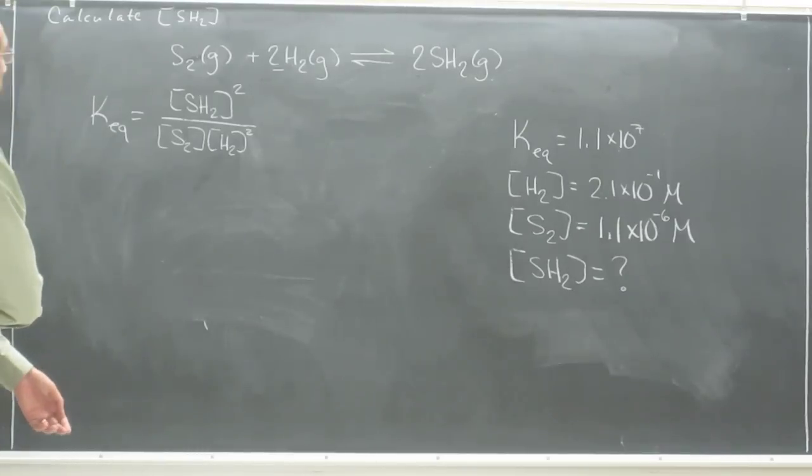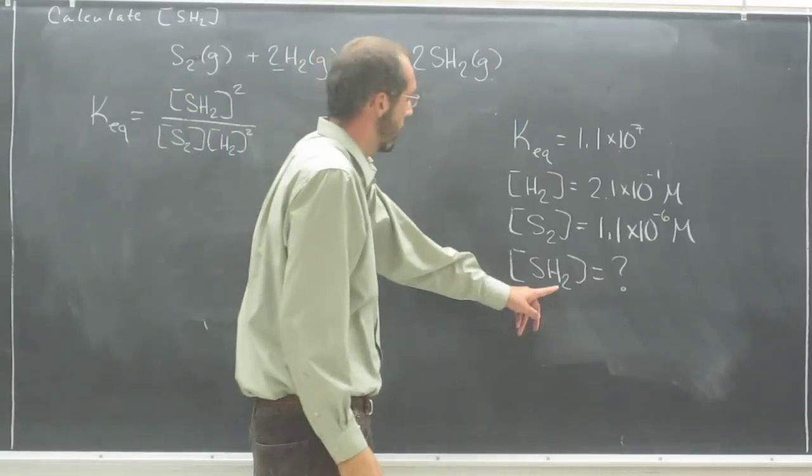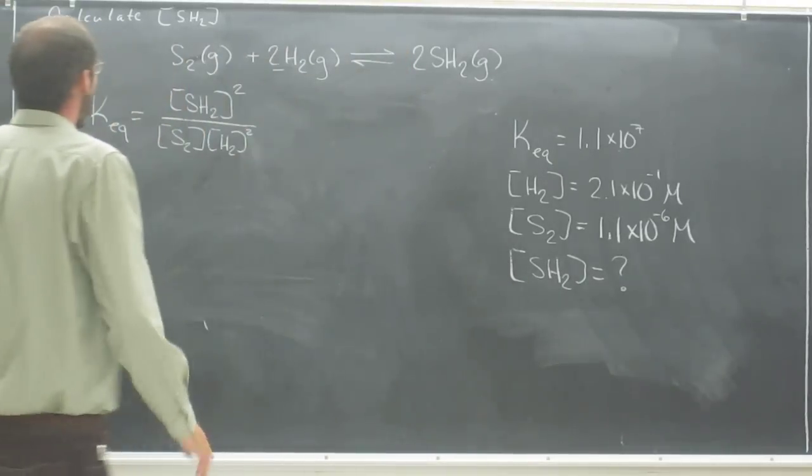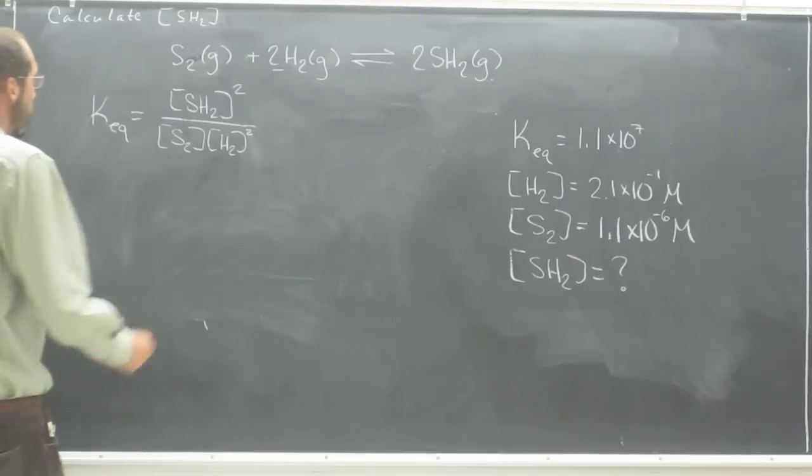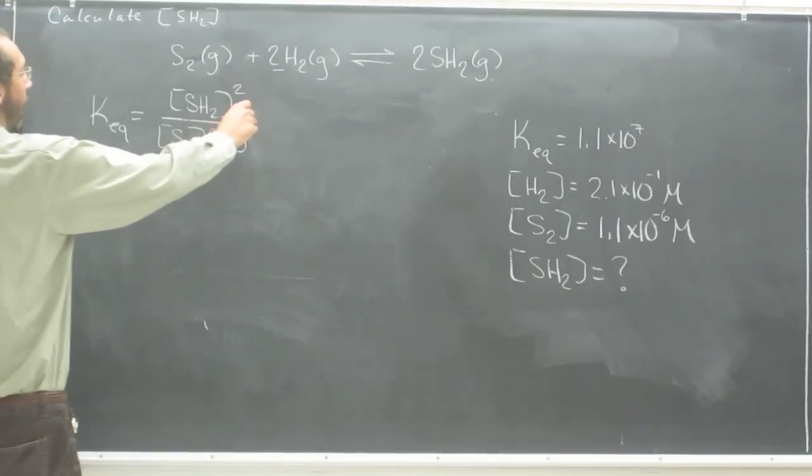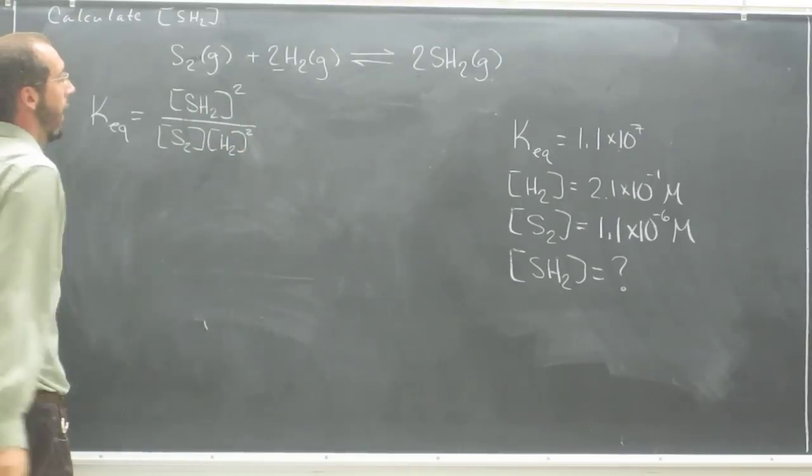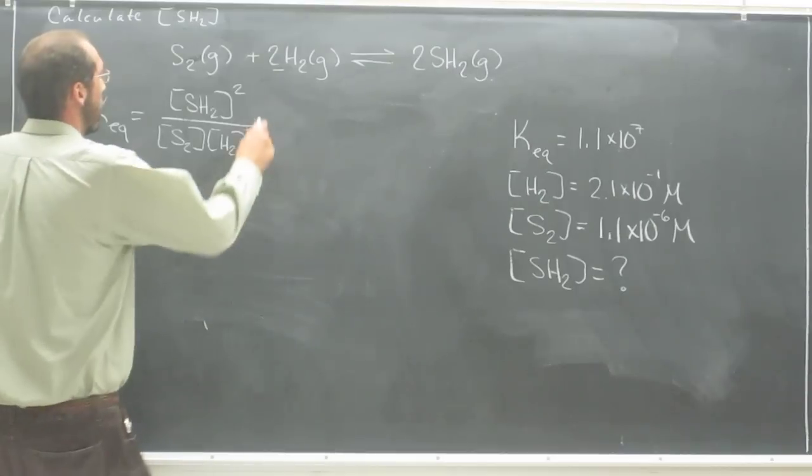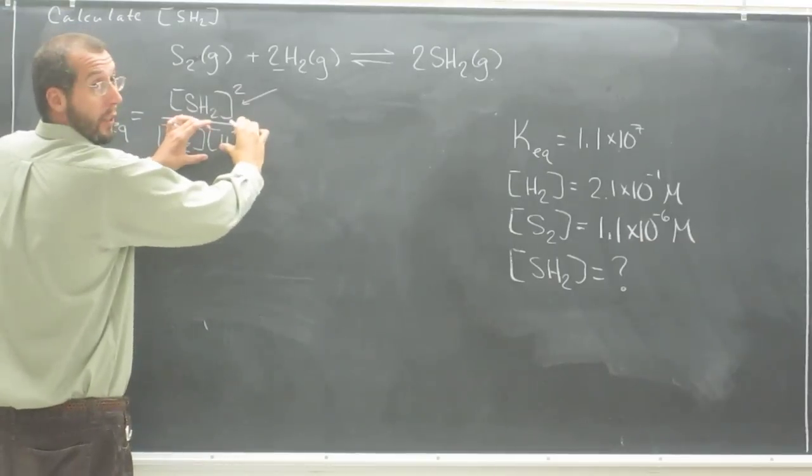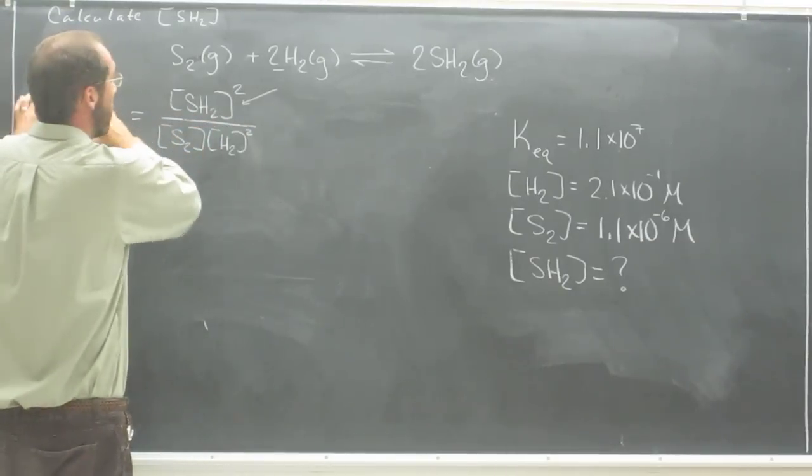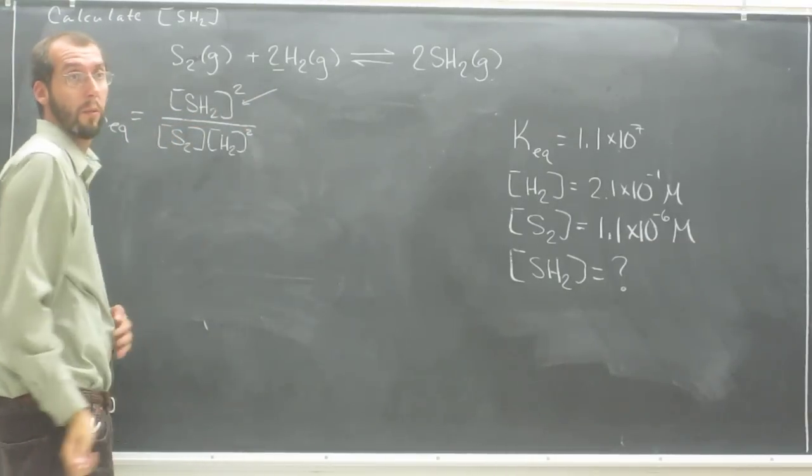So now we're looking for the concentration of SH2, so we're going to algebraically manipulate this equation. You want to isolate the variable SH2 here. So you want to get rid of all of this stuff from the bottom, put it over here, and you want to get rid of that square.